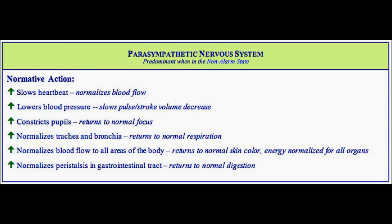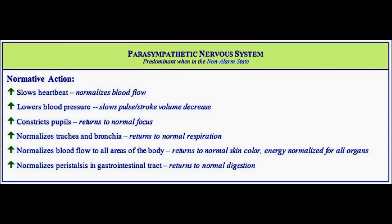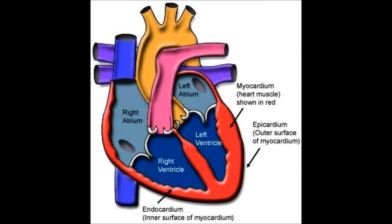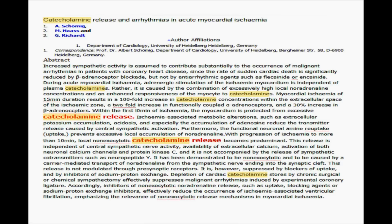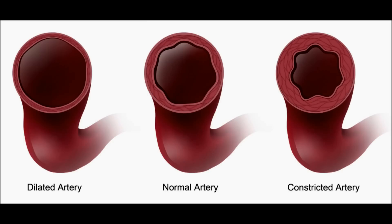Number one: parasympathetic reflexes from the infarcted myocardium cause diaphoresis. Number two: inflammation in the myocardium causes a rise in the systemic body temperature. Number three: catecholamines released at the site of the infarction cause intermittent localized pain. Or number four: constriction of central and peripheral blood vessels causes a decrease in blood pressure.